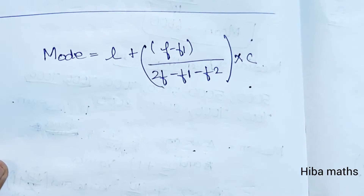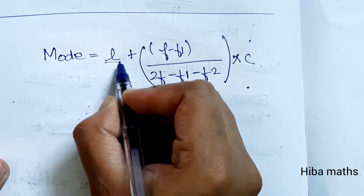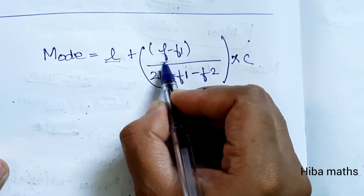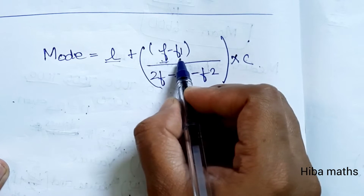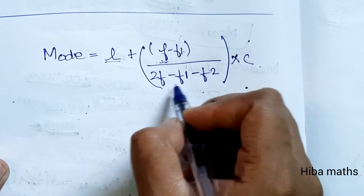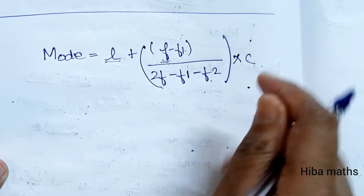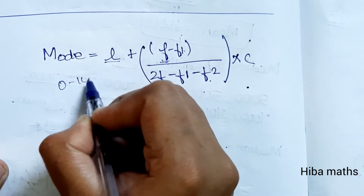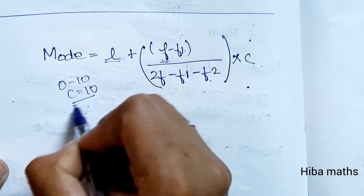In this formula, L is the lower limit of the modal class, F is the highest frequency, F1 is the frequency before the highest frequency class, F2 is the frequency after it, and C is the class width, which is 10.